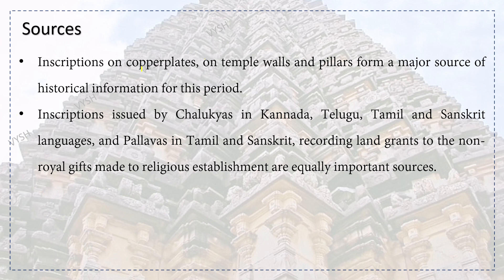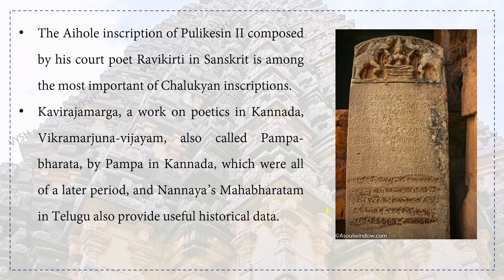What are the sources? Inscriptions on copper plates, on temple walls and pillars form a major source of historical information for this period. Inscriptions issued by Chalukyas in Kannada, Telugu, Tamil and Sanskrit, and by Pallavas in Tamil and Sanskrit, recording land grants and non-royal gifts made to religious establishments, are equally important sources. The Aihole inscription of Pulakeshin II, composed by his court poet Ravikirti in Sanskrit, is among the most important Chalukyan inscriptions.